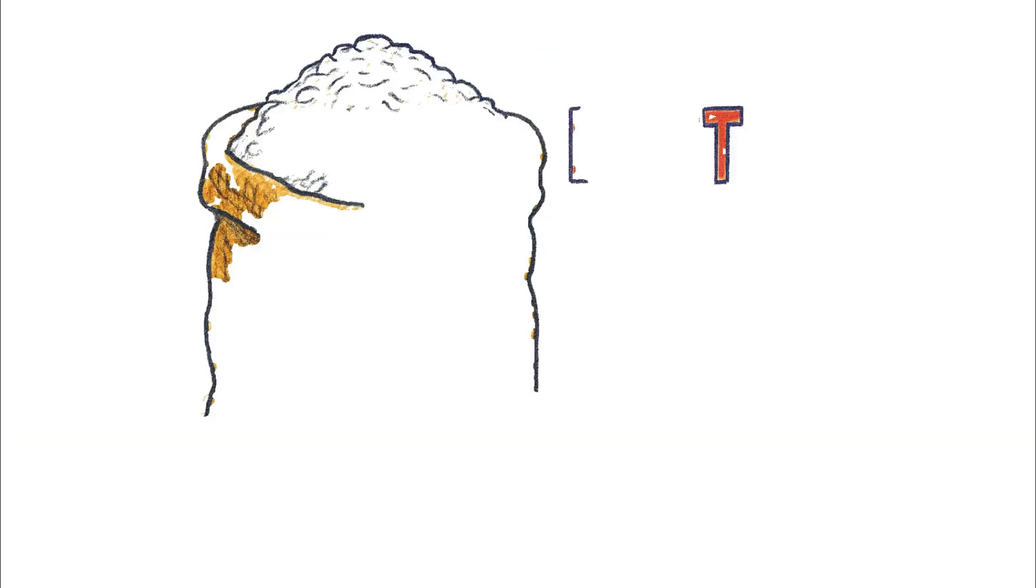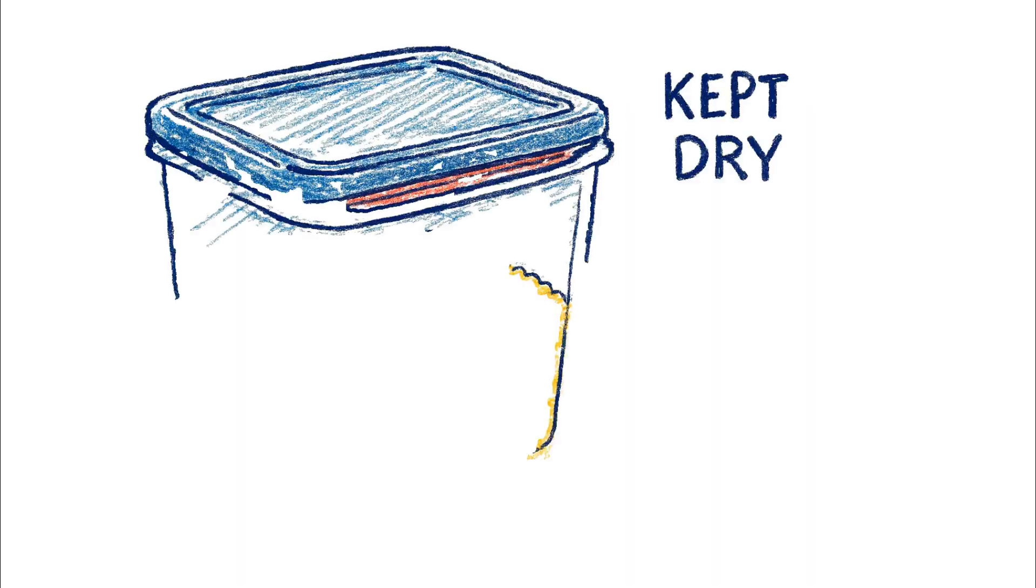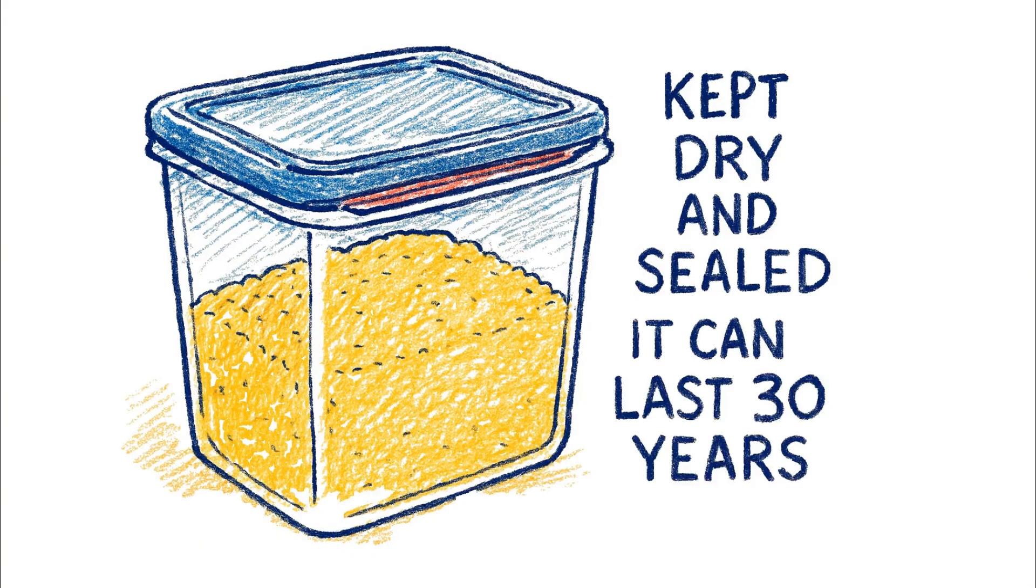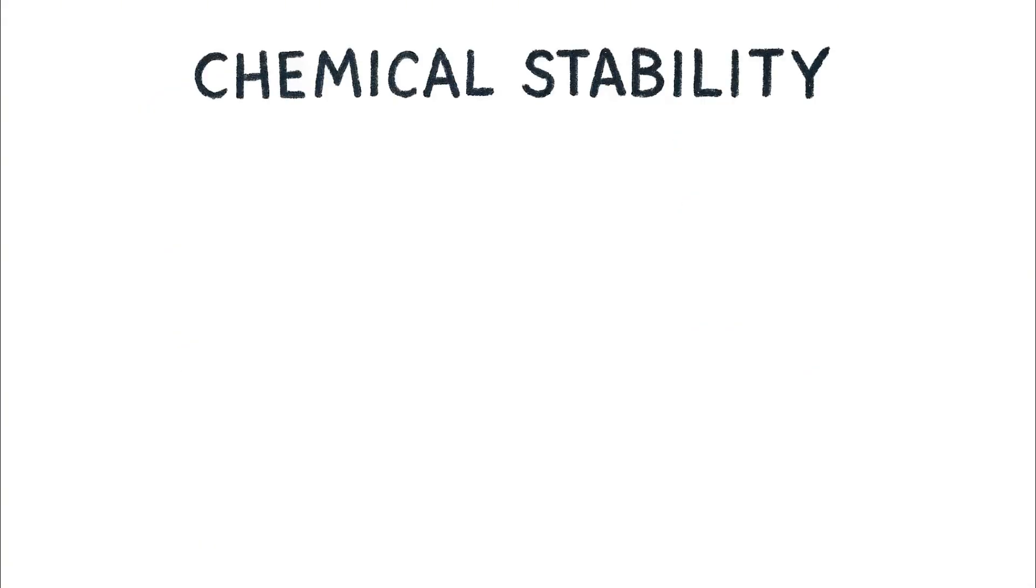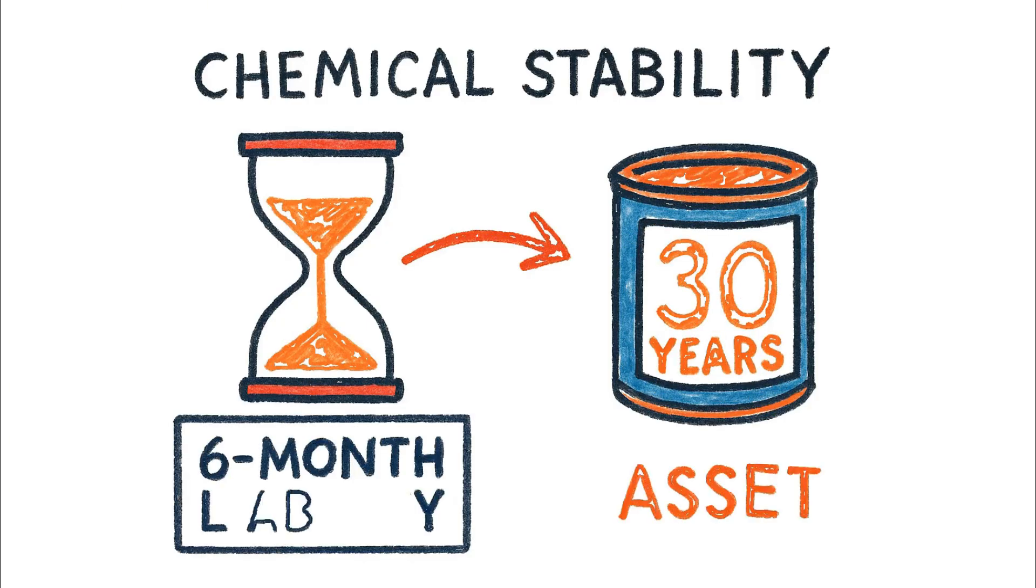Without the fats to oxidize, it becomes a bastion of longevity. Kept dry and sealed, it can lie dormant, perfectly preserved for 30 years or more, waiting to provide pure, reliable energy when it's needed most. This chemical stability is the difference between a 6-month liability and a 30-year asset.